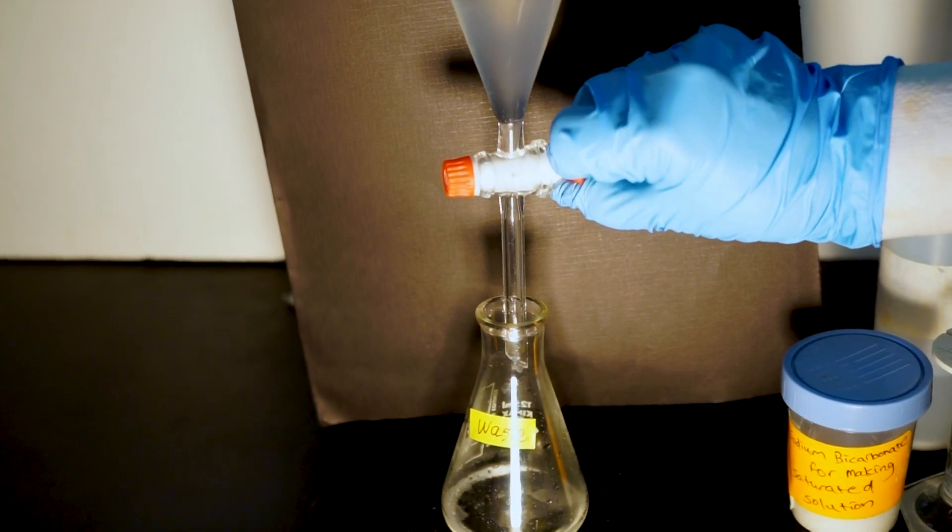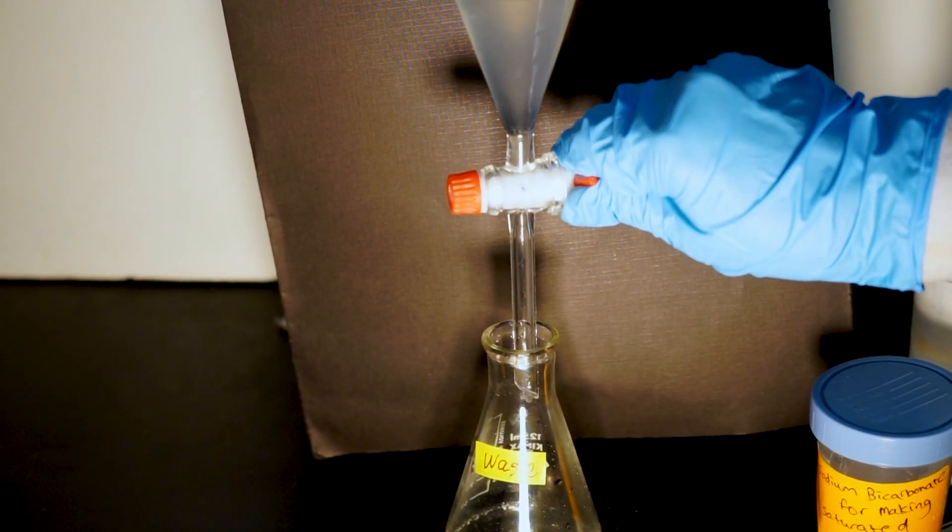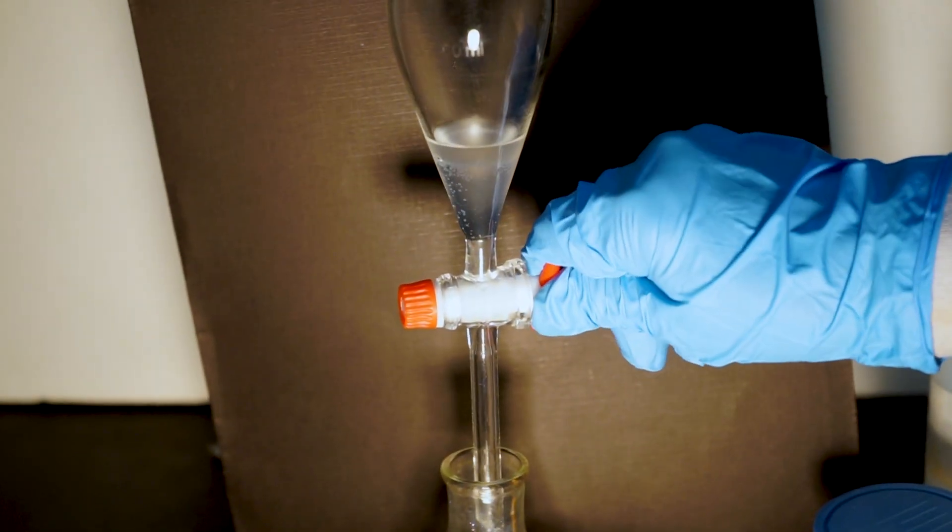Drain the bottom layer into the waste flask. You may again notice bubbling from the waste flask. It's just once again the bicarbonate reacting with the acid. Once again, drain slowly at first to ensure the reaction doesn't get out of control and splash out of the flask.